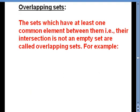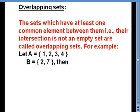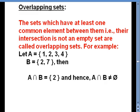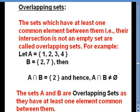Overlapping sets are sets which have at least one common element among them — that is, their intersection is not empty. For example, A equals {1, 2, 3, 4} and B equals {2, 7} have one common element, 2. Therefore A intersection B equals {2}, and these are called overlapping sets. In short, sets which are not disjoint sets are surely overlapping sets.